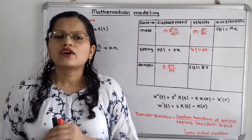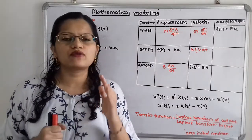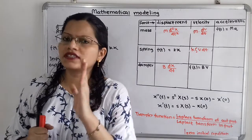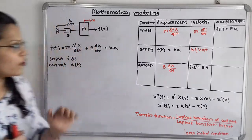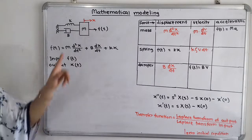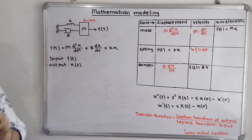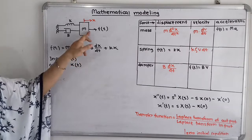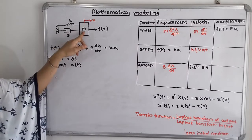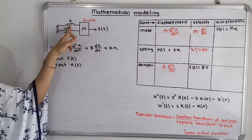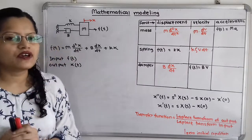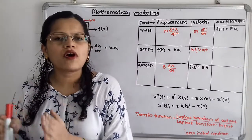Now what is the first step? For this given mechanical system we have to obtain the mathematical model. The applied force is f, and due to this applied force there are reaction forces developed due to the mass, the spring, and the damper. We have to write the force due to mass, force due to spring, and force due to damper, each in terms of displacement. We know that the action force equals the sum of reaction forces.